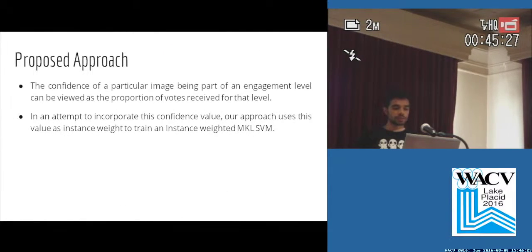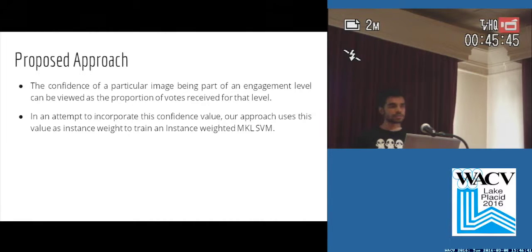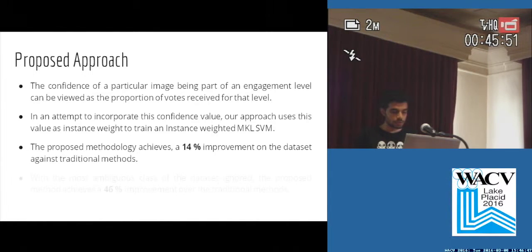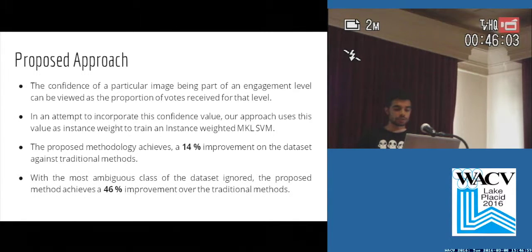The main idea behind the proposed approach is that the votes obtained from the crowdsourcing platform are used as instance weights to train the SVMs. The intuition is that if the SVM is misclassifying some instance, it should be penalized more. The proposed approach achieves a 14% improvement over traditional methods, and when ignoring the really ambiguous class — engagement level 2 — it achieves a 46% improvement over traditional methods.